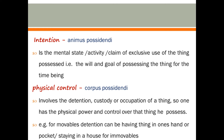For instance, for movables, detention can be having a thing in one's hand or pocket; for immovables, staying in the house — that is physical control.